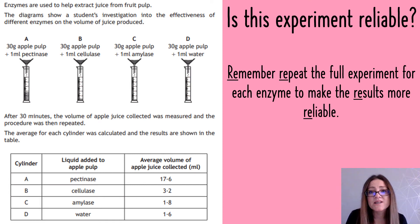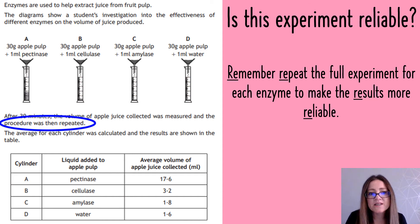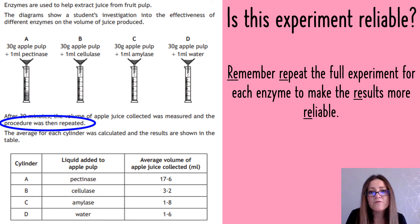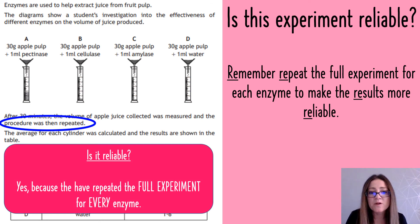The next typical question is: is this experiment reliable? Remember, you repeat the full experiment for each enzyme to make the results more reliable. Looking at this question, it says that the procedure was repeated. The second you see any indication that it's been repeated or that they've taken an average, it means it's a more reliable experiment. So yes, this one is reliable because they've repeated the full experiment for every enzyme.